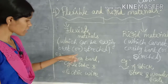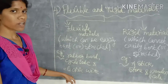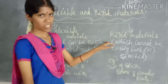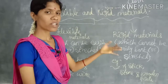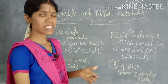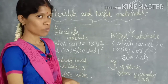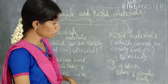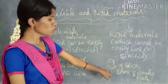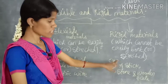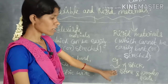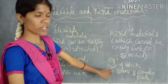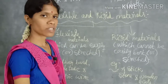In the case of a rigid material, the material which cannot be easily bent or stretched is known as the rigid material. For example, a stick, a wooden scale, or a stone — these materials do not bend or stretch easily, so they are known as rigid materials.